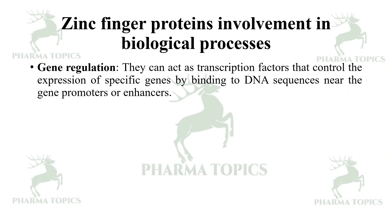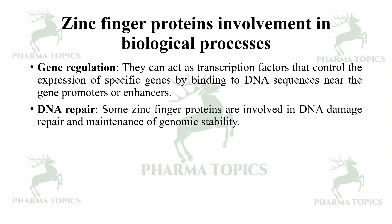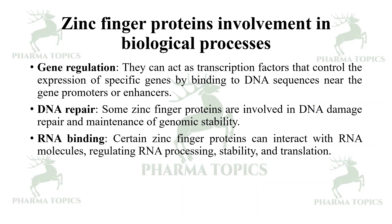The biological processes involving zinc finger proteins include gene regulation — they can act as transcription factors that control the expression of specific genes by binding to DNA sequences near gene promoters or enhancers. They also help in DNA repair, where some zinc finger proteins are involved in DNA damage repair and maintenance of genomic stability. Certain zinc finger proteins can also interact with RNA molecules, regulating RNA processing, stability, and translation.